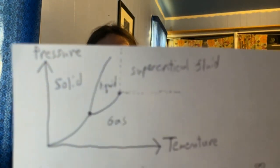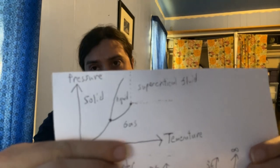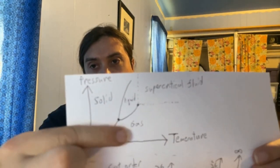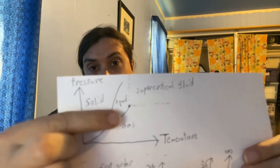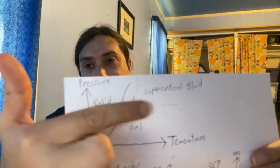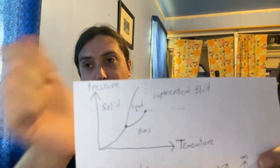Here's a typical phase diagram for some stuff — it could be anything. We have a gaseous state at low pressures and high temperatures, a solid state at high pressures and low temperatures, and a liquid state in between. Notice these dashed lines in an area called the supercritical fluid.